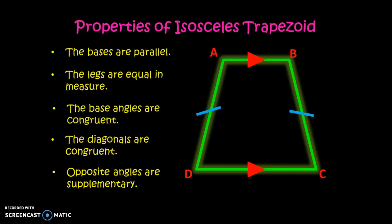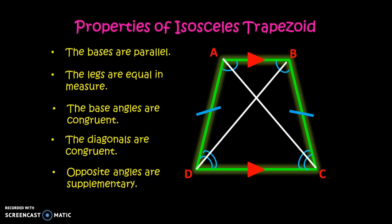Also, the base angles are congruent. So angle A is congruent to angle D, and angle D is congruent to angle C. Next, the diagonals are congruent — diagonal AC is congruent to diagonal BD. And for the last property, opposite angles are supplementary.